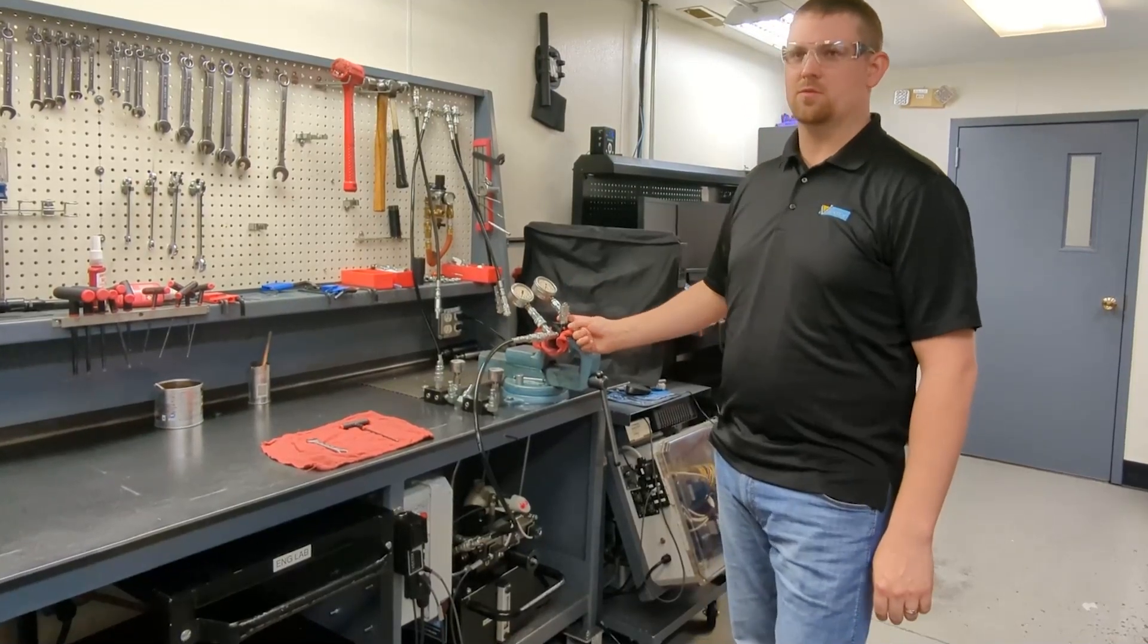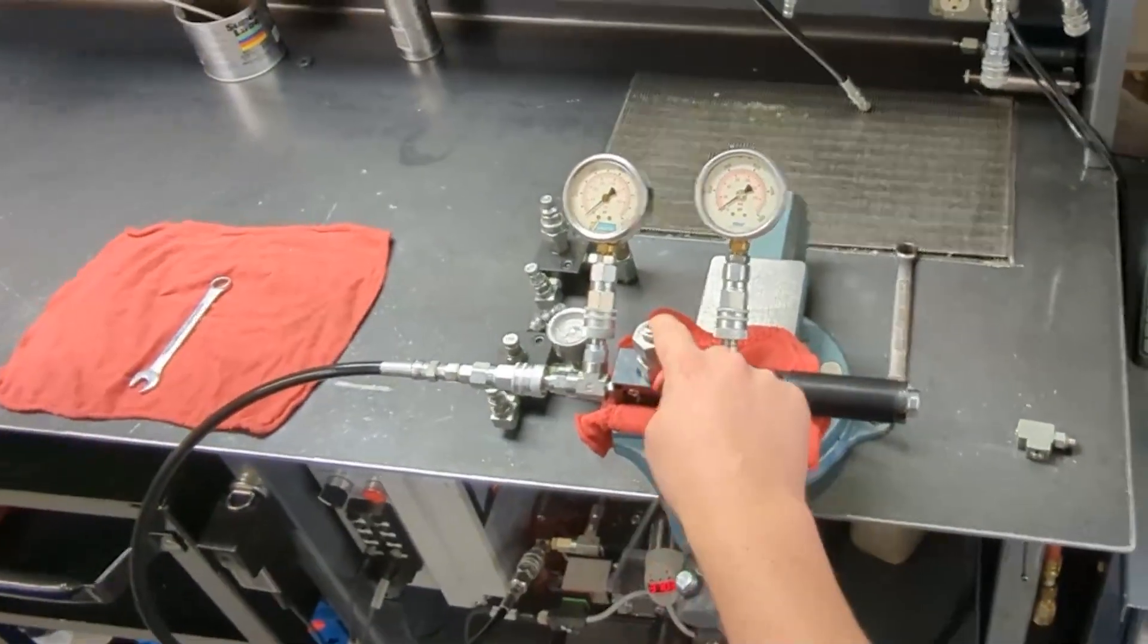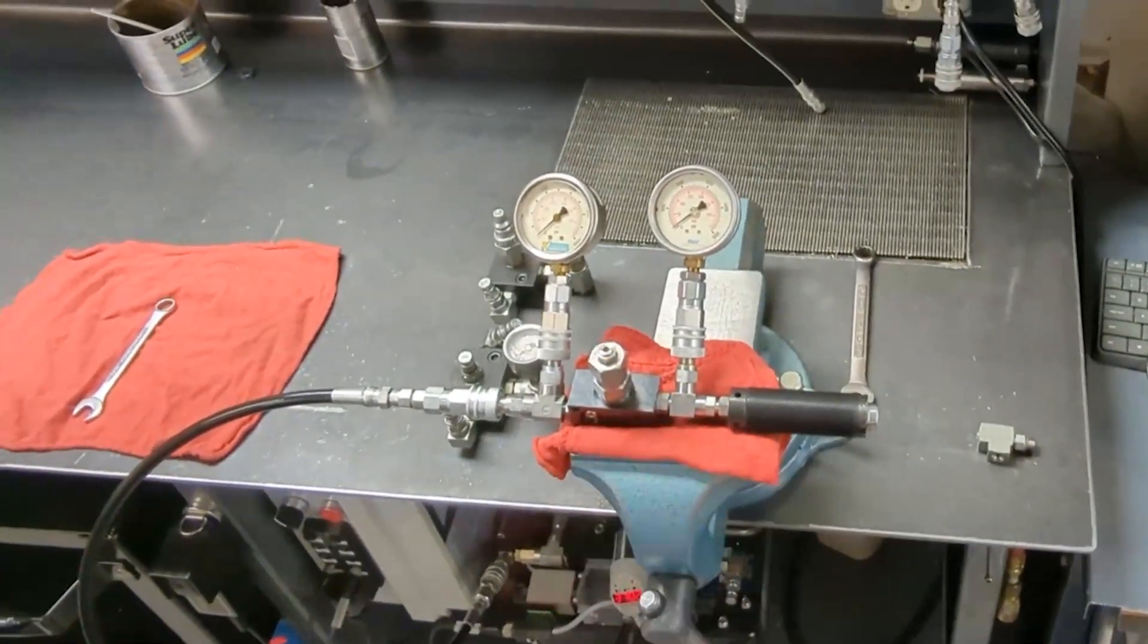From the factory, sequence valves are set to 2500 PSI. To increase the set pressure, you drive the adjustment screw in; to decrease you drive it out.